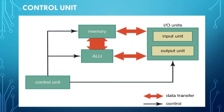Next, we are going to see the subunit of CPU — control unit. This unit coordinates all other units of the computer. It directs the input unit to send data to memory unit for storage and then to ALU for further processing. It transfers the processed data from ALU to memory unit and finally directs it to the output unit for display.